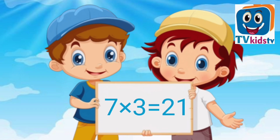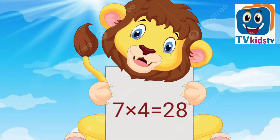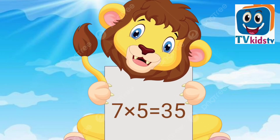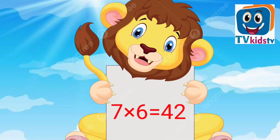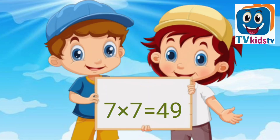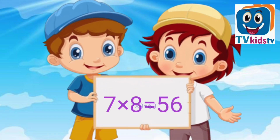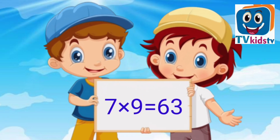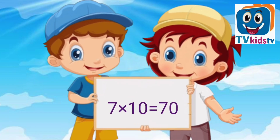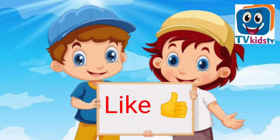7 times 3 equals 21. 7 times 4 equals 28. 7 times 5 equals 35. 7 times 6 equals 42. 7 times 7 equals 49. 7 times 8 equals 56. 7 times 9 equals 63. 7 times 10 equals 70.